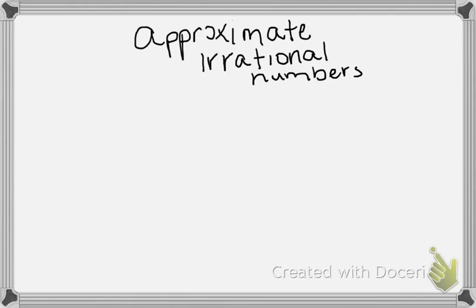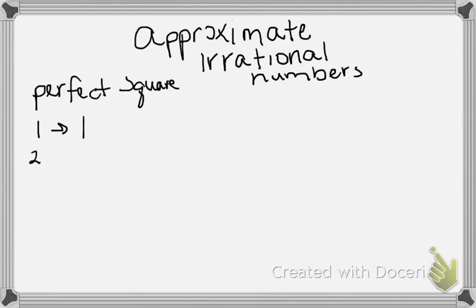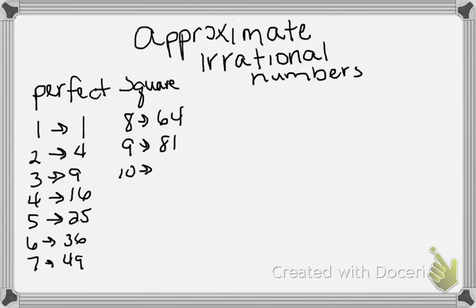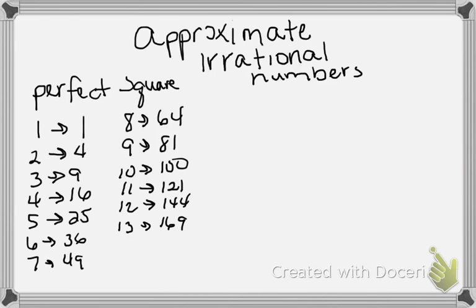First thing you need to know is what a perfect square is. The best way to show you is by example: 1×1=1, 2×2=4, 3×3=9, 4×4=16, 5×5=25, 6×6=36, 7×7=49, 8×8=64, 9×9=81, 10×10=100, 11×11=121, 12×12=144, 13×13=169. We'll stop right there.